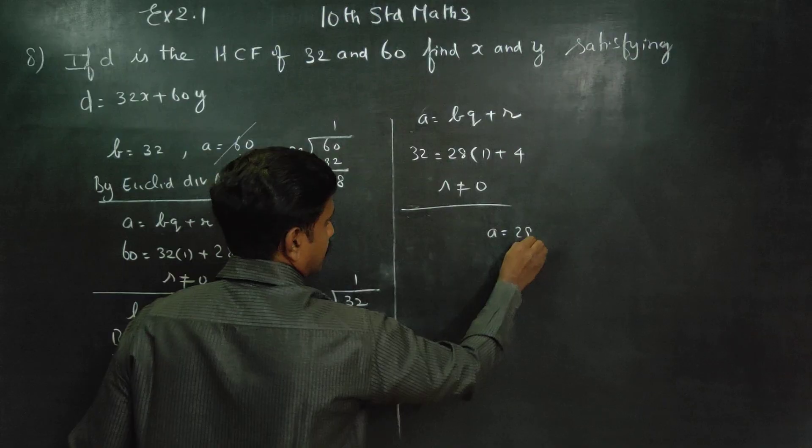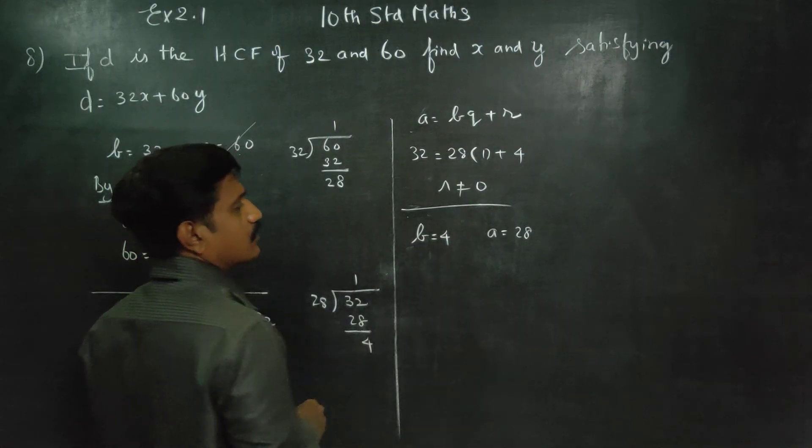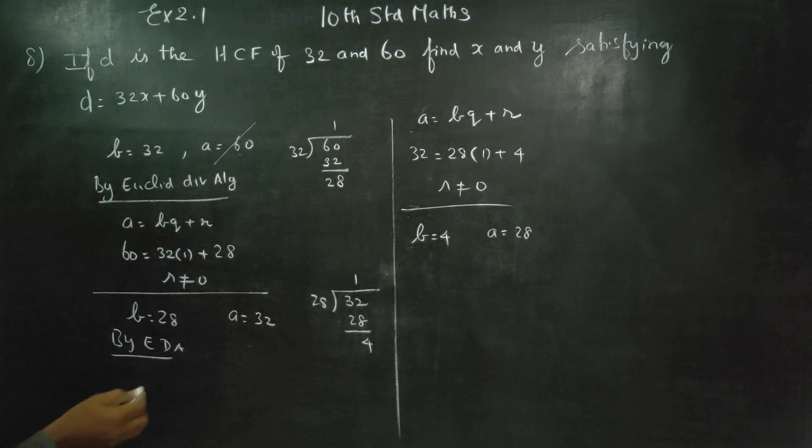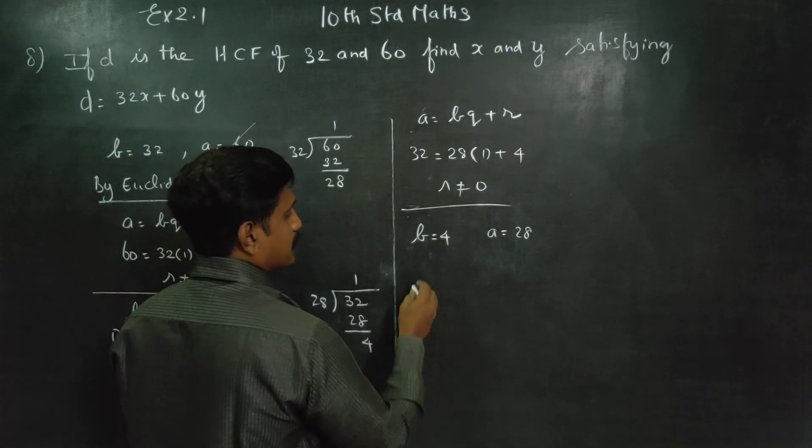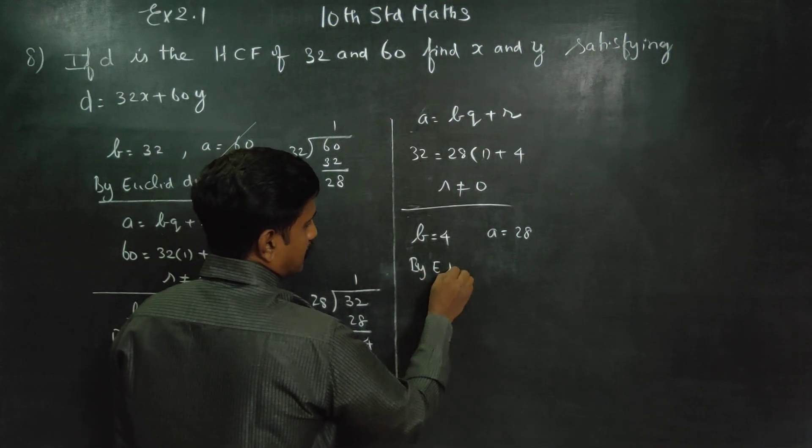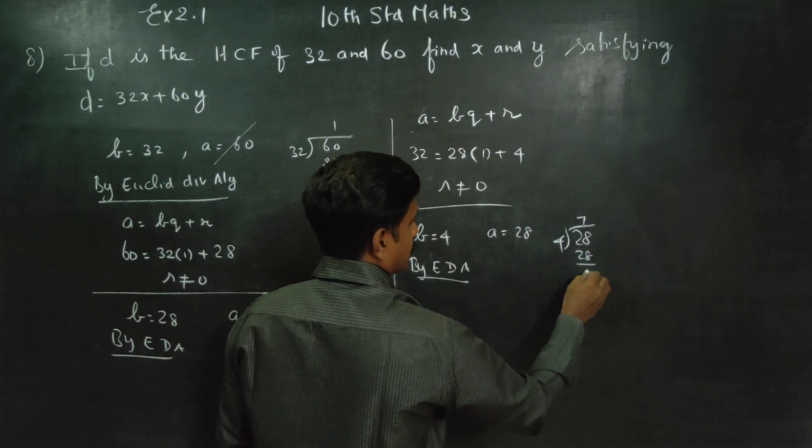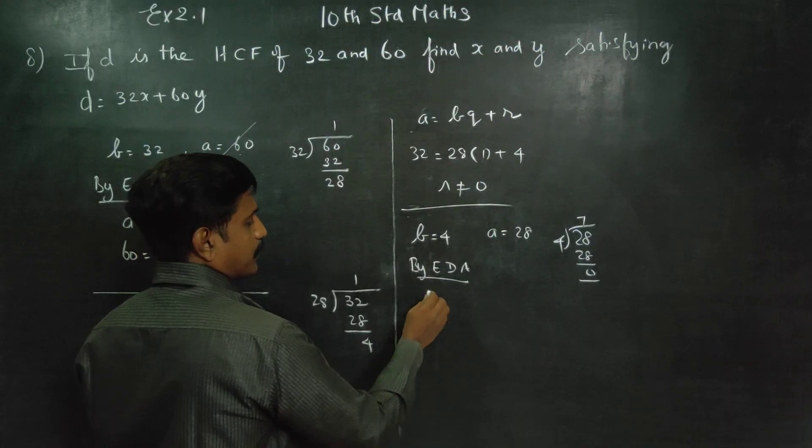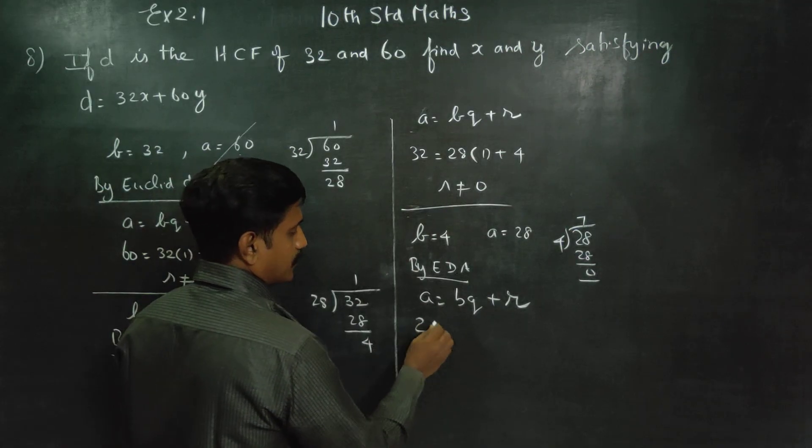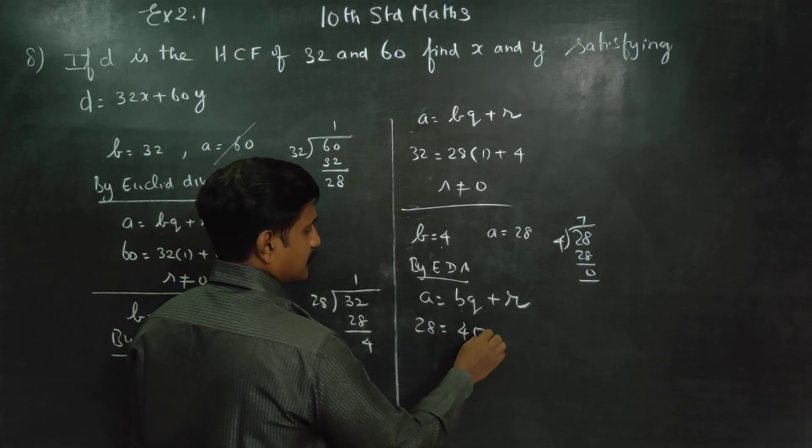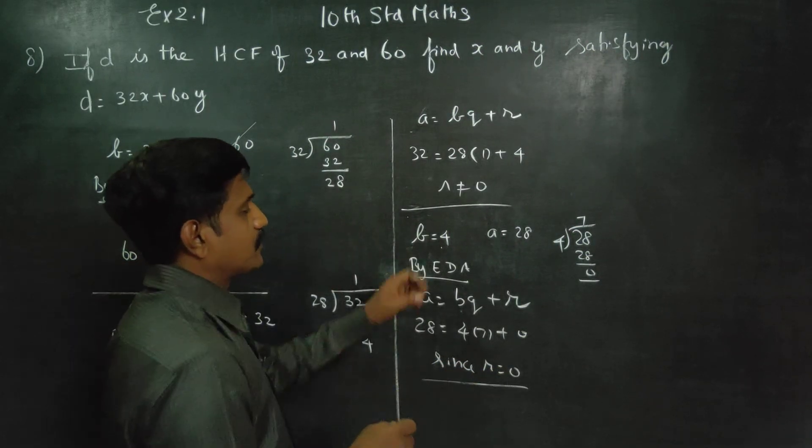A is equal to B. A is equal to 28. R is equal to 4.